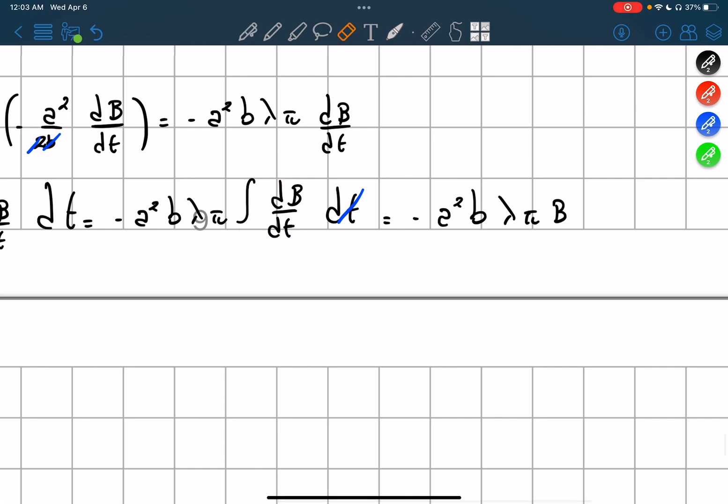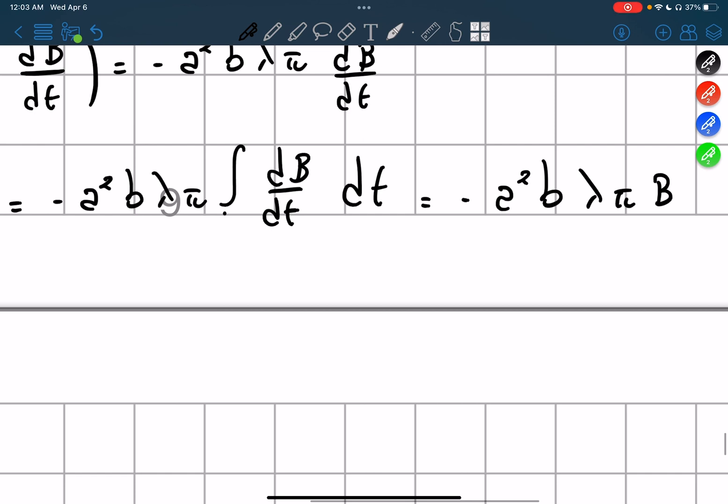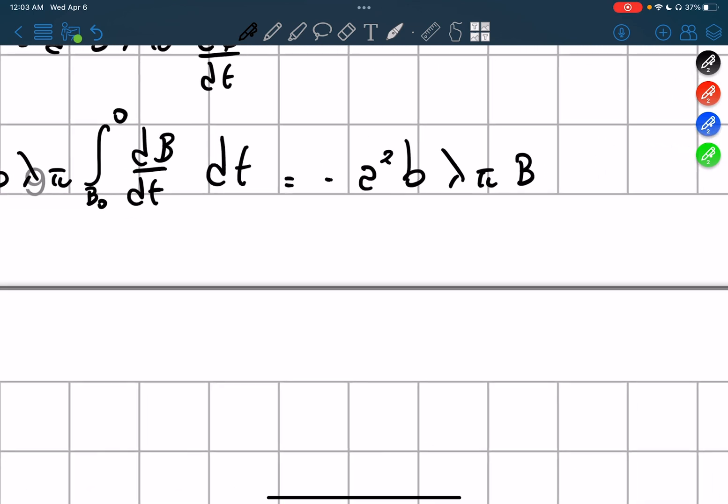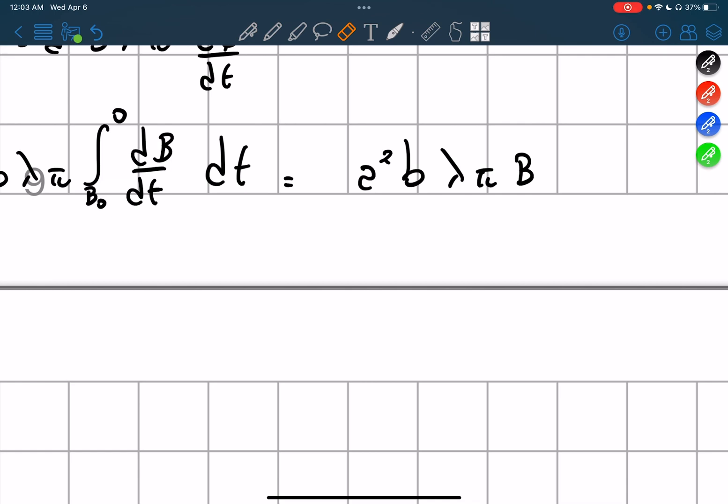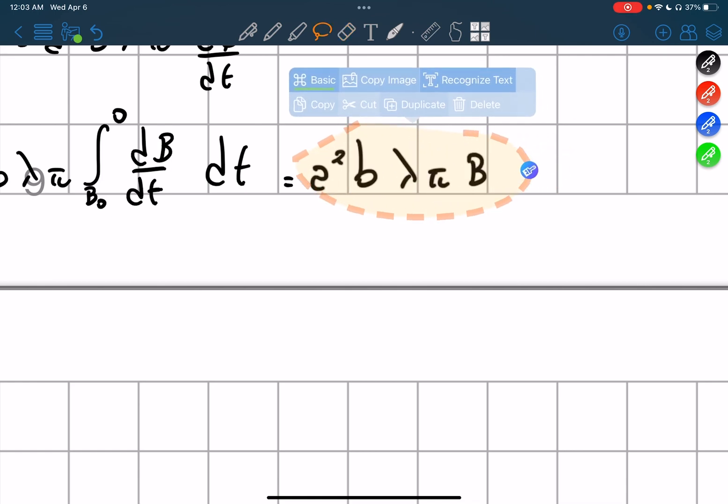Actually, you know what, let me do something a little different. So we start from the initial moment is B naught, and the final moment will be zero, right? Because at the beginning, the value of B is B naught, and then the end will be zero. Therefore, this negative in front goes away, and then we get a B naught.